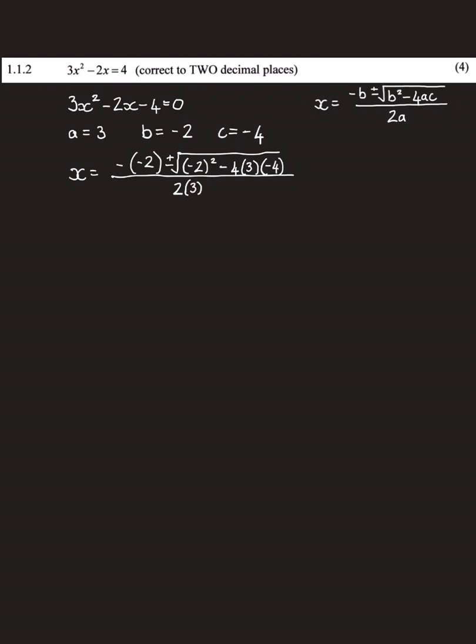Now at this point you use your calculator immediately. You don't try and do this in your head, that's just silly. And we would get the answer of x equals 1.54 or x equals negative 0.87. The reason we get two answers is because in the first we're going to use the plus the square root of all of those, and then in the next one we are going to do the minus of the square root. And that's how we get to those answers.